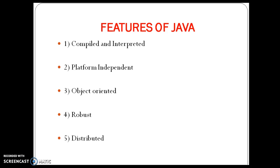The second feature is platform independent, which is one of the most unique and important features of Java over other languages. When a Java file is compiled, the compiler generates an executable file called a .class file. This .class file contains bytecode, which is a set of instructions given to the JVM. The bytecode generated on one platform can be executed on any platform. By this concept, we can say that Java is platform independent.